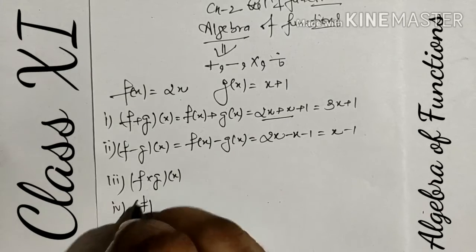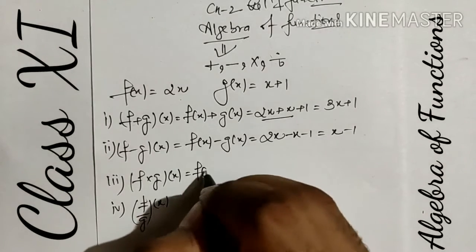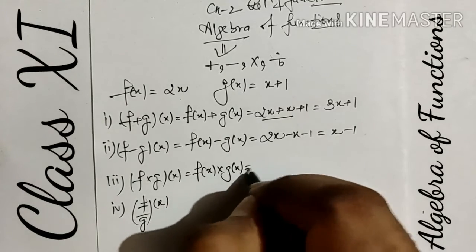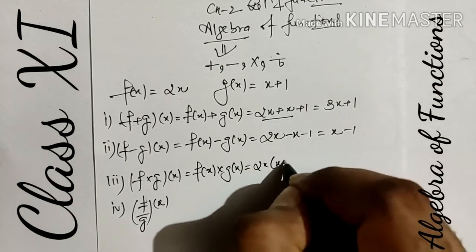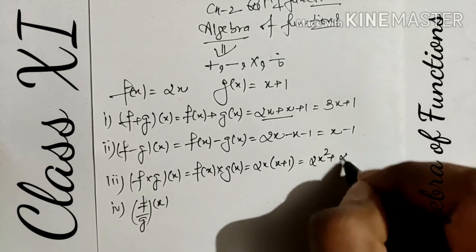Multiplication: it means f(x) multiplied by g(x). f(x) is 2x multiplied by (x+1). So overall, when we open the bracket, we get 2x²+2x.